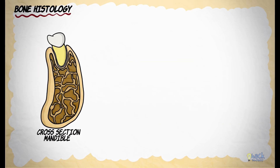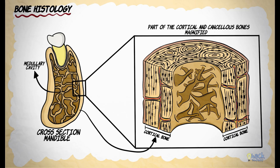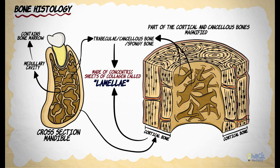Let's have a look at the histology of bone with the mandible as an example. The mandible has a rigid outer cortical bone or cortex forming an outer shell surrounding a medullary or marrow cavity. The medullary cavity, apart from housing bone marrow, is interrupted by a network of bony spicules or trabeculae called cancellous or spongy bone. The cortical and cancellous bones are histologically identical in that they are made of concentric sheets of collagen called lamellae.